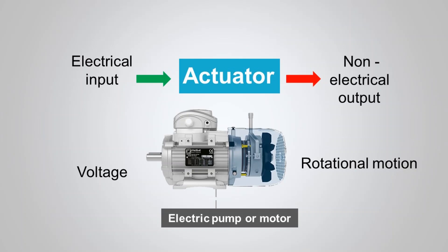An actuator, on the contrary, is an output transducer with an electrical input, intended to convert an electrical quantity into a non-electrical signal in order to control that quantity. For example, an electric pump or motor converts electrical input — that is, voltage — into non-electrical output, that is, rotational motion.